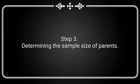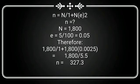Step 3. Determining the sample size of parents. The following will be obtained. n = N/1+N(e)2. n = ?, N = 1,800, e = 5/100 = 0.05. Therefore: 1,800/1+1,800(0.0025) = 1,800/5.5, n = 327.3